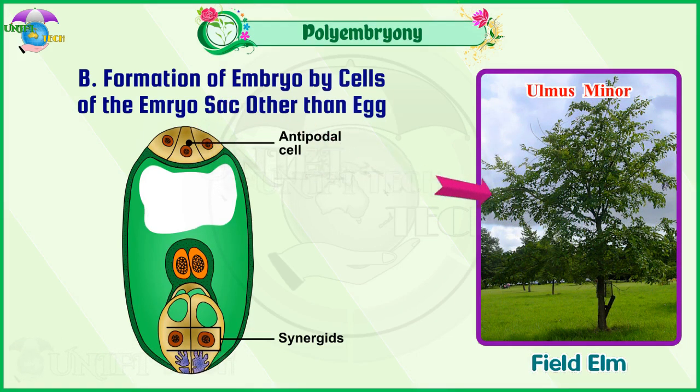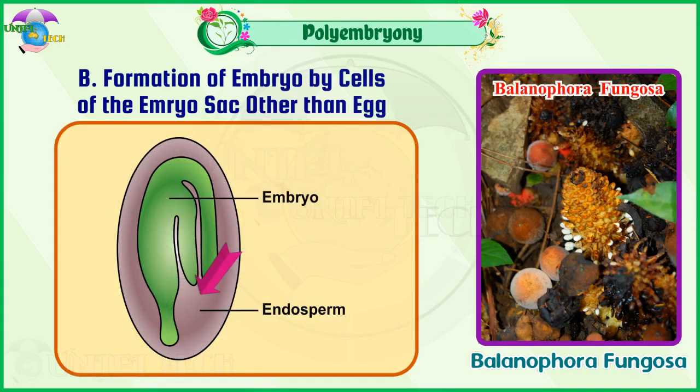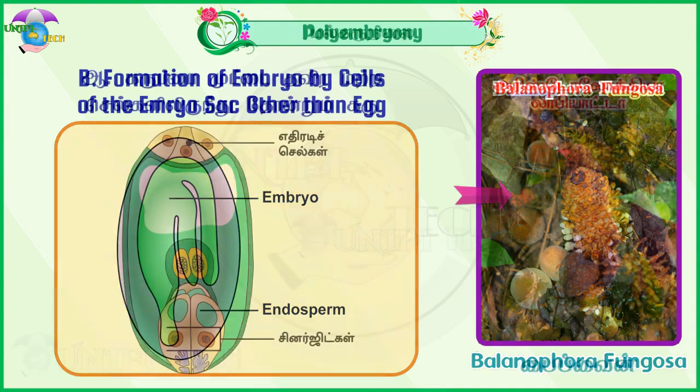From antipodals — example: Albus. And from endosperm — example: Balanophora.